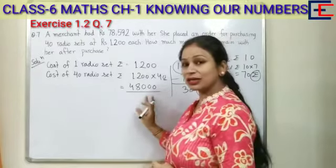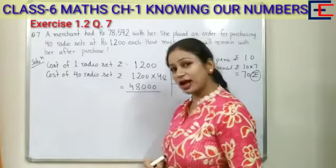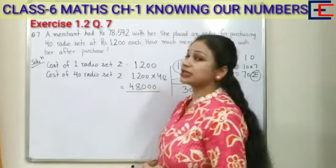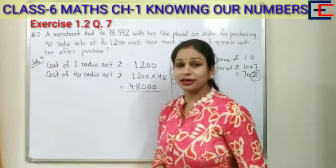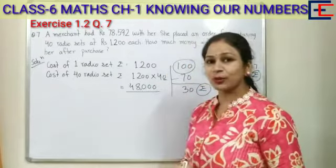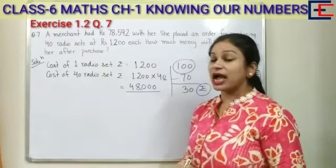The result is 48,000. It means the merchant needs 48,000 rupees to purchase 40 radio sets.